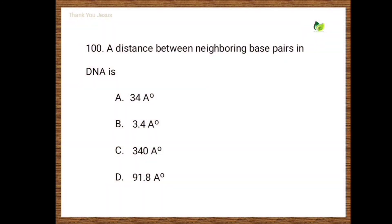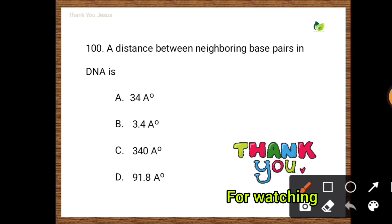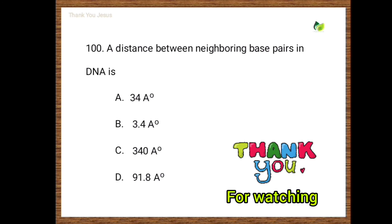Next question: The distance between neighboring base pairs in DNA is — options are 34 Å, 3.4 Å, 340 Å, 0.91 Å. The correct option is 3.4 Å.